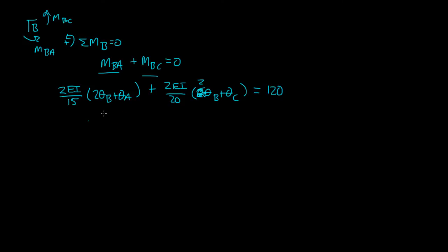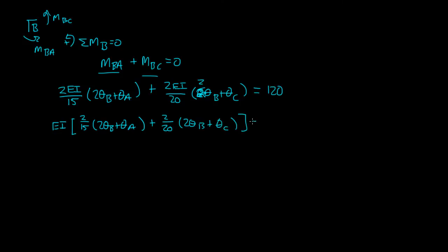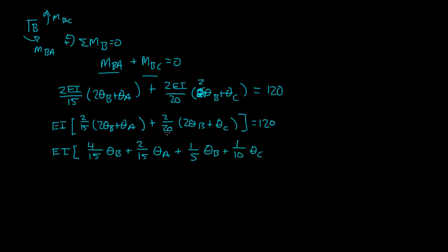Let's simplify this down a bit. I can pull out an EI, and then I'm left with (2/15)(2θ_B + θ_A) plus (2/20)(2θ_B + θ_C) equal to 120. If I distribute the 2/15 and the 2/20 into their respective terms, I should get 4/15 θ_B plus 2/15 θ_A plus 4/20 — that's 1/5 — θ_B plus 1/10 θ_C. And 2/20 is just 1/10.